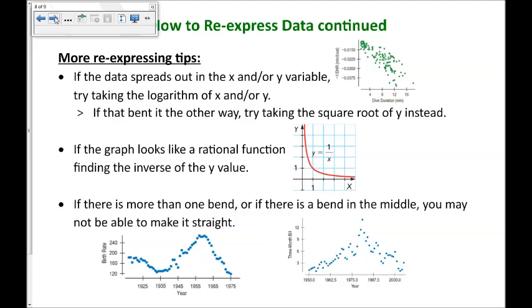If the data is spreading out or fanning out in either the x or the y variable, then try taking the logarithm of that or both variables. And again, if it bends the other way, then try taking the square root of y instead. That kind of is a weaker way of adjusting the data than doing the logarithm. If the graph looks like a rational function, meaning it's kind of curved down this way, then try finding the inverse of the y value. Also keep in mind that if there's more than one bend, or if there's a bend in the very middle of it, you may not be able to make it straight. There are some graphs where you cannot do a re-expression to make it straight again.